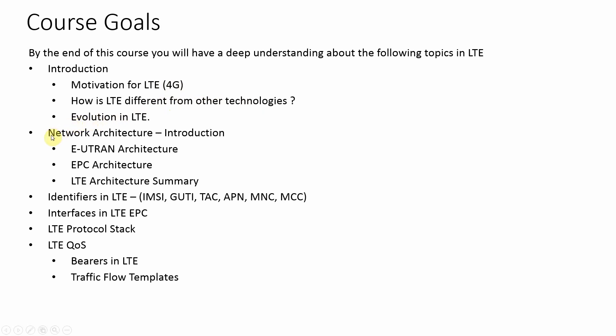In the second section we will start by giving you an overview of the network architecture, and specifically this section will be broken out into three sub-sections. We will start off by talking about the E-UTRAN architecture, which is the RAN architecture, followed by the Evolved Packet Core, which is the focus of this course. Towards the end we will talk about the summary of the LTE architecture, which will tie together the E-UTRAN and the EPC piece.